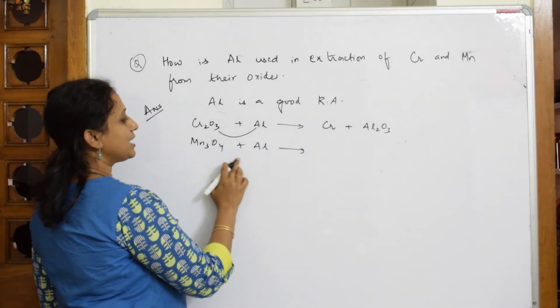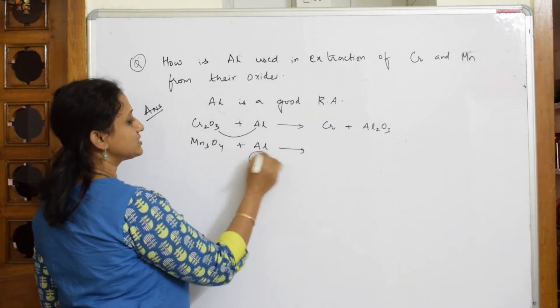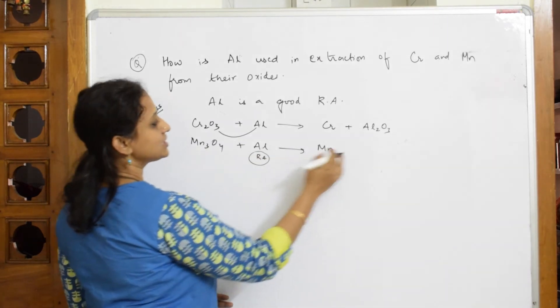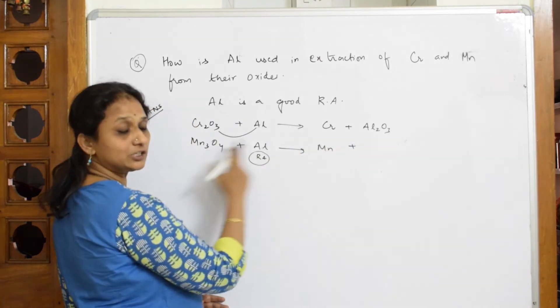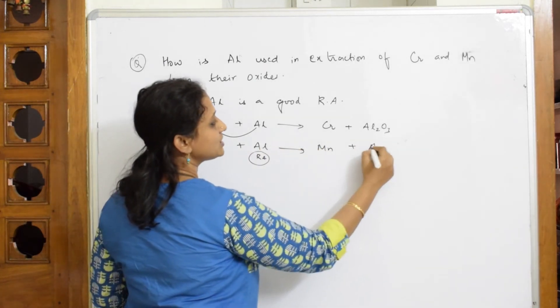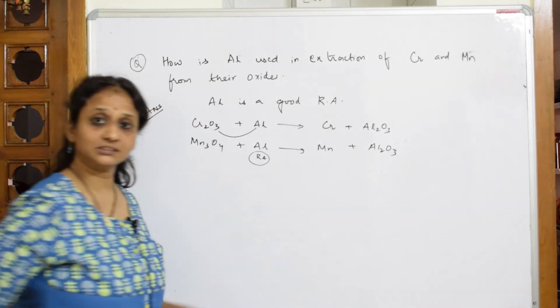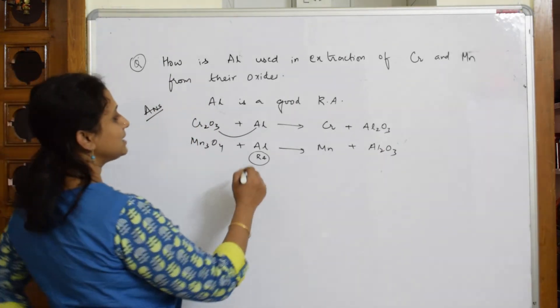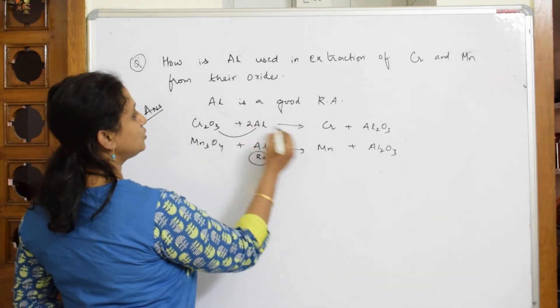Now here also the same thing, aluminum acting as a reducing agent, so itself gets oxidized and releases out manganese from its metal oxide to metal. So metal oxide to metal, and aluminum gets oxidized. This gets reduced and this gets oxidized. That's it. So the very important reducing agent factor. So let me balance this.